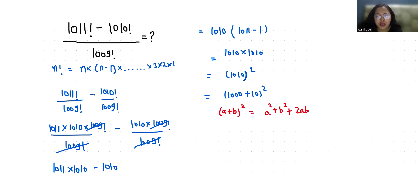So this I can write as 1000² + 10² + 2 × 1000 × 10. This equals 1,000,000 + 100 + 20,000.